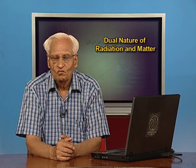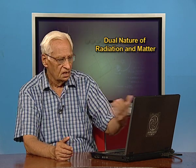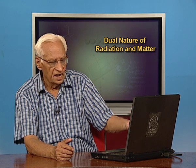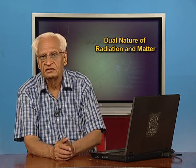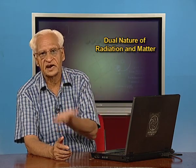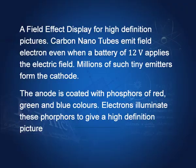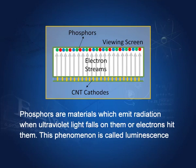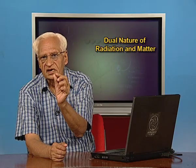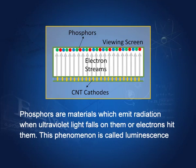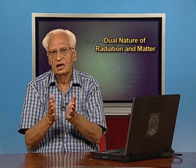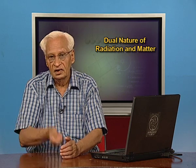Normally we need very strong fields, but these days special materials have been developed so that even a field from a 12-volt battery can extract electrons. Carbon nanotubes (CNT) — where nano means 10 to the power minus 9 meters — are very thin carbon tubes. If you apply a field of even 12 volts, electrons can be emitted.